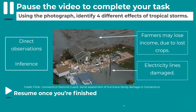We're going to start by practising a geographical skill. Using the photograph, I would like you to identify four different effects of tropical storms. You might make a direct observation from the image — for example, electricity lines damaged. Or you can make an inference, a reasoned guess about other effects taking place — for example, farmers may lose income due to lost crops. Please pause the video, complete your task, and then resume when you are ready.